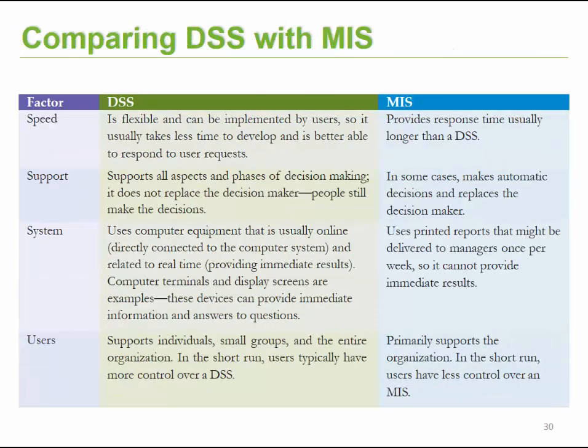In terms of speed, DSS is very flexible and can be implemented by its users, taking less time to develop and respond to requests, whereas MIS typically takes longer to provide feedback. On the support side, DSS supports all aspects and phases of decision making and doesn't replace the decision maker — it aids that person in coming to conclusions. With MIS, in most cases it can make automatic decisions and ultimately can replace the decision maker.